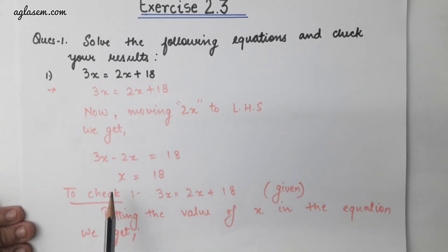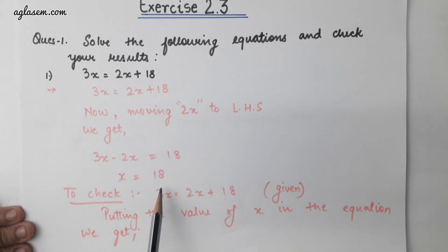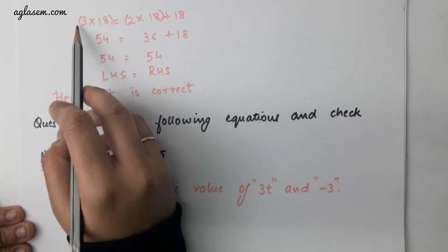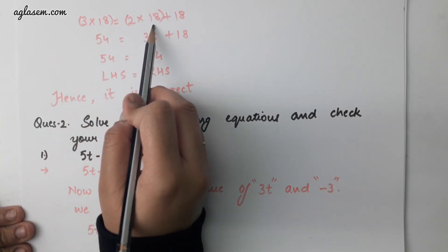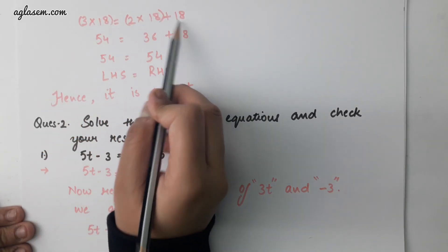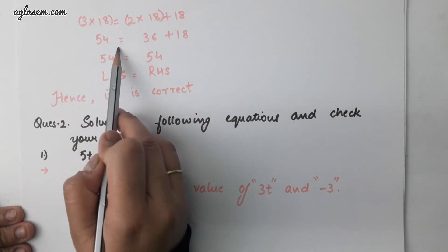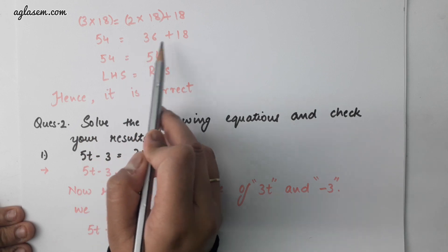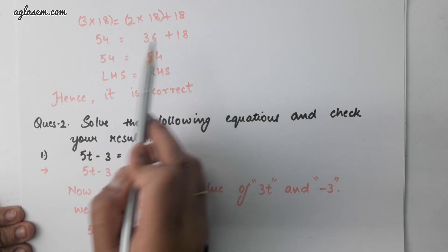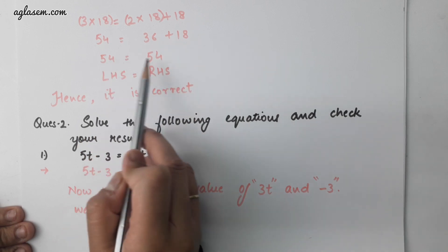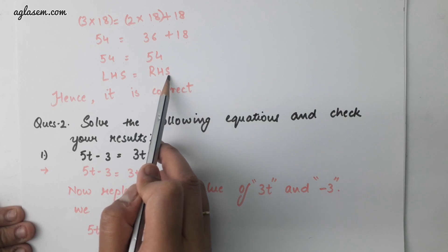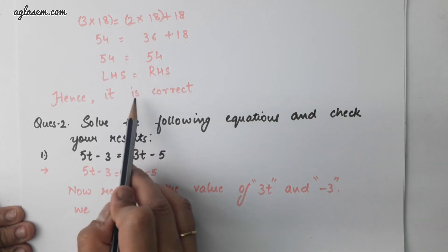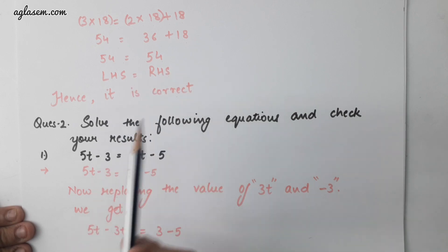To check, we will put the value of x equals to 18 in the equation. 3 into 18 equals to 2 into 18 plus 18. So 54 is equal to 36 plus 18, which gives 54 is equal to 54. Therefore, LHS is equal to RHS and hence it is correct.